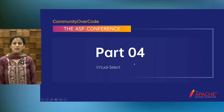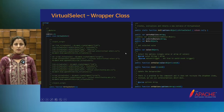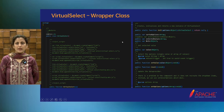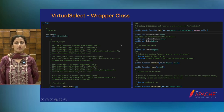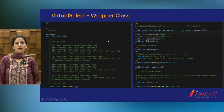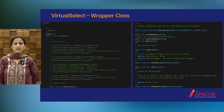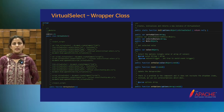Virtual Select is another JavaScript library — a game changer for transforming your select input. It is a powerful JavaScript library that takes the standard HTML select element to new heights. It offers dynamic loading and visualization of options, making it perfect for scenarios where you have a large number of choices. By using Virtual Select, you can enhance user experience and performance — it loads options on demand, ensuring fast rendering and smooth interactions even with extensive lists.